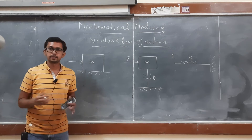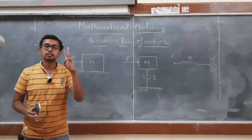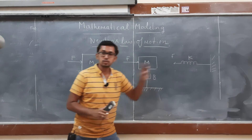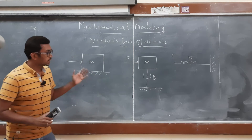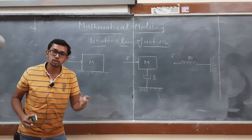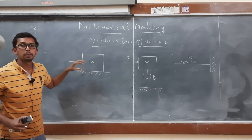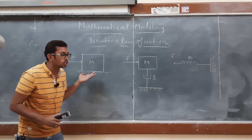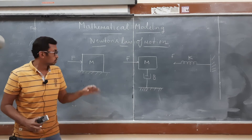In a mechanical translational system there are mainly three elements: mass, damper, and spring. We are going to consider each one by one and write the differential equation which represents mass, damper, and spring. The first one is mass. Let us consider a rigid mass which has negligible friction — that is an assumption we take to understand the behavior of mass.